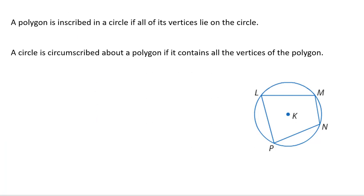A polygon that is inscribed in a circle is if all vertices lie on the circle. So L, M, N, and P, all the vertices lie on that circle. So we could say that LMNP is inscribed in the circle.